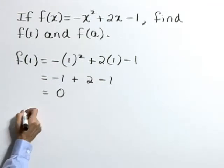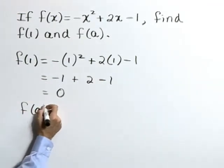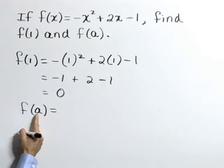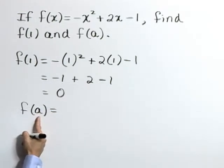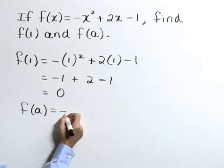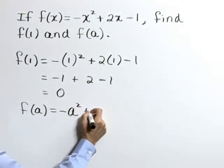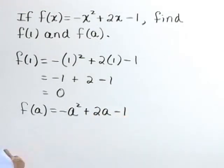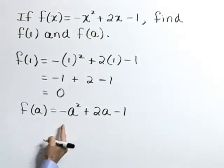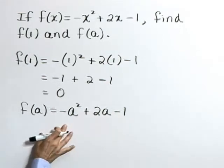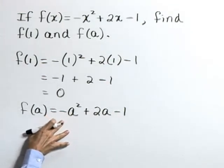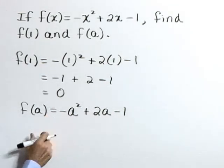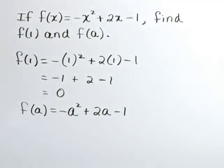Now we want to find f of a. With this one, we'll substitute the value a for x in our function so that it reads the negative of a squared plus 2 times a minus 1. These terms aren't alike, so we can't combine them. This is written in its simplified form. f of a is equal to negative a squared plus 2a minus 1.